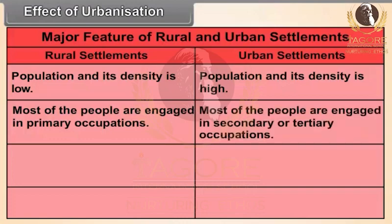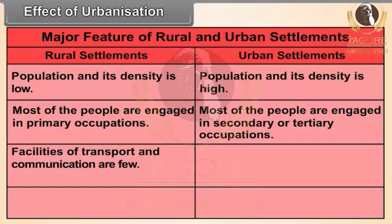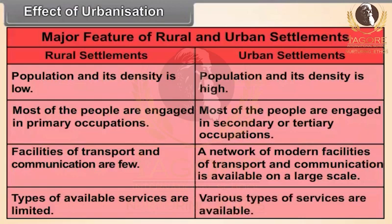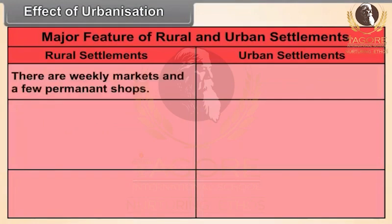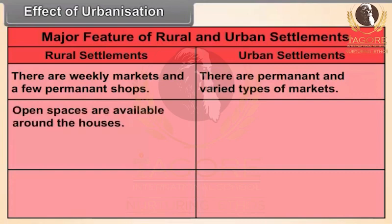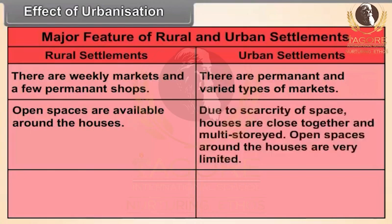Rural settlements — facilities of transport and communication are few. Urban settlements — a network of modern facilities of transport and communication is available on a large scale. Rural settlements — types of available services are limited. Urban settlements — various types of services are available. Rural settlements — there are weekly markets and a few permanent shops. Urban settlements — there are permanent and varied types of markets. Rural settlements — open spaces are available around the houses. Urban settlements — due to the scarcity of space, houses are close together and multi-storied; open spaces around the houses are very limited. Rural settlements — house plans are traditional. Urban settlements — house plans are modern.